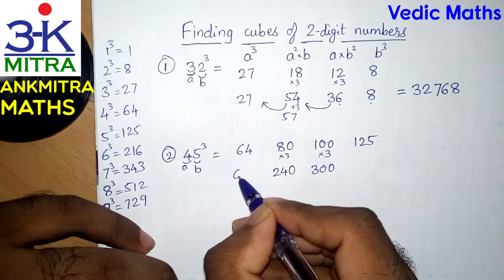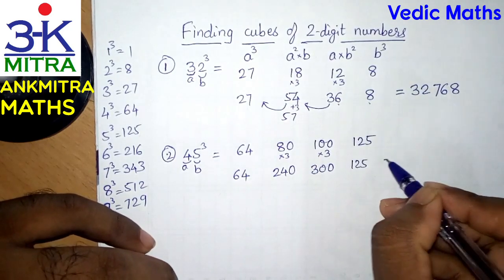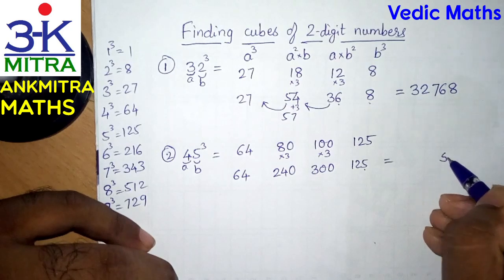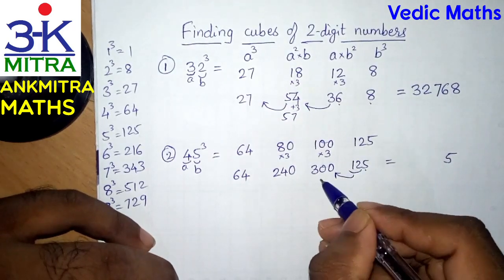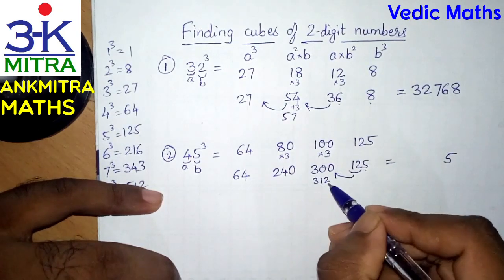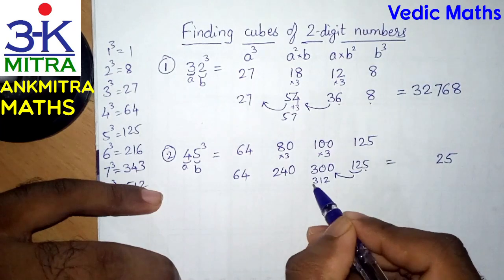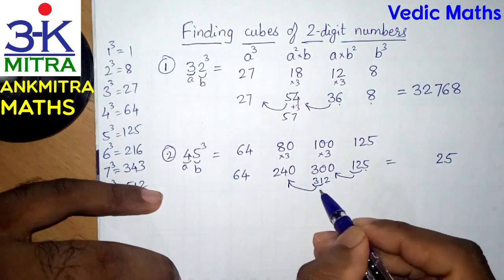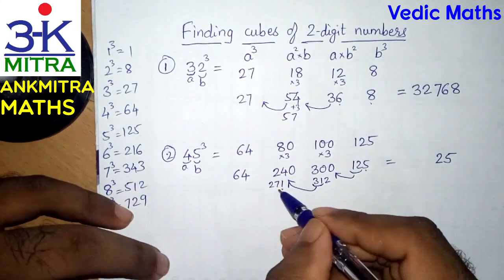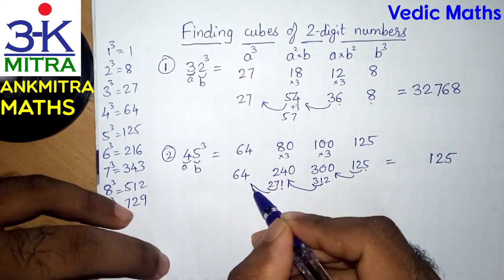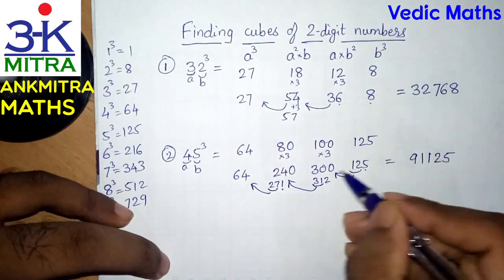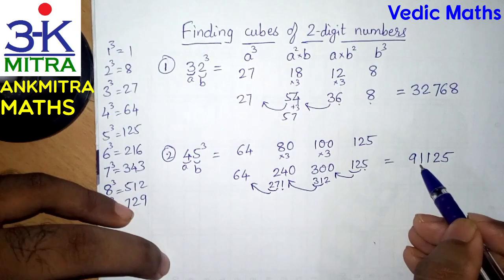64 and 125 remain as they are. Starting with the units place: from 125, the 5 goes to the units place and 12 is carried to 300, making 312. From 312, the 2 is written in the answer and 31 is carried to 240, making 271. From 271, the 1 is written in the answer and 27 is carried to 64, giving 91. So the final answer for 45 cube is 91,125.